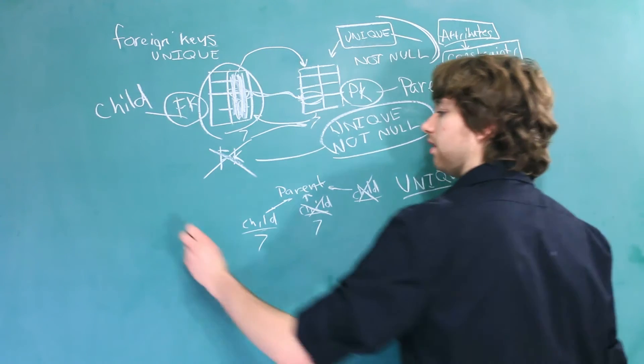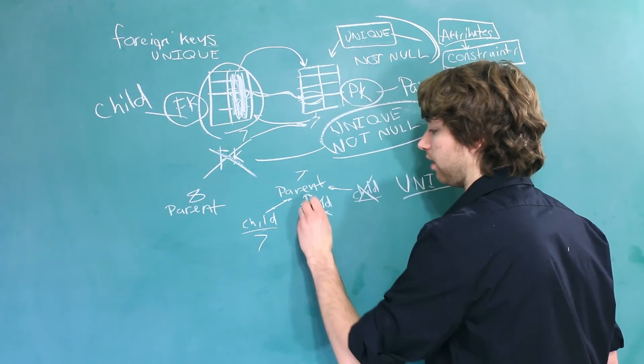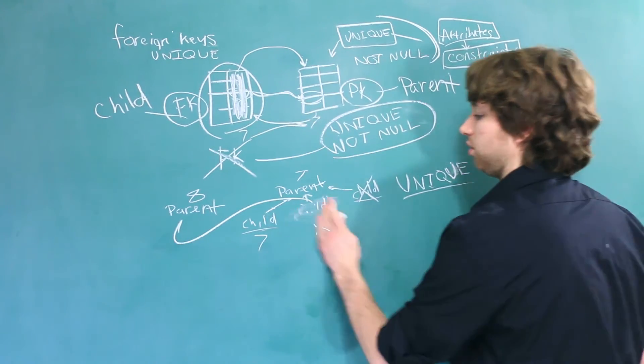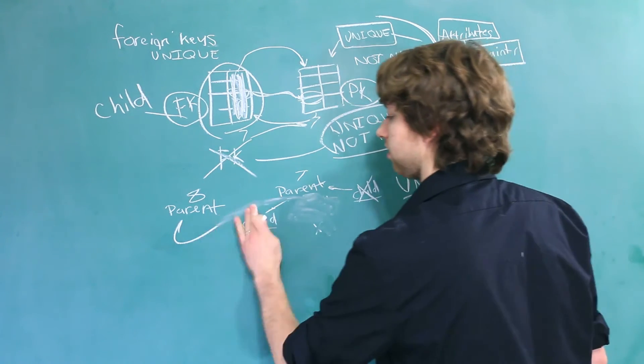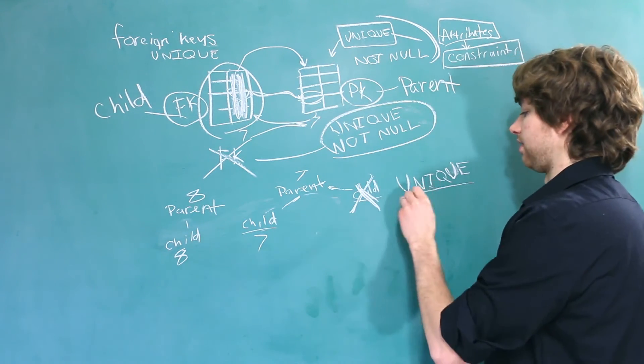But if we have another parent, this one might have the ID of eight. And this child could reference that parent. And now we're okay. And it might make more sense if, you know, we move the whole thing over there. So let's do that. This is okay. This child still cannot exist because of this unique constraint.